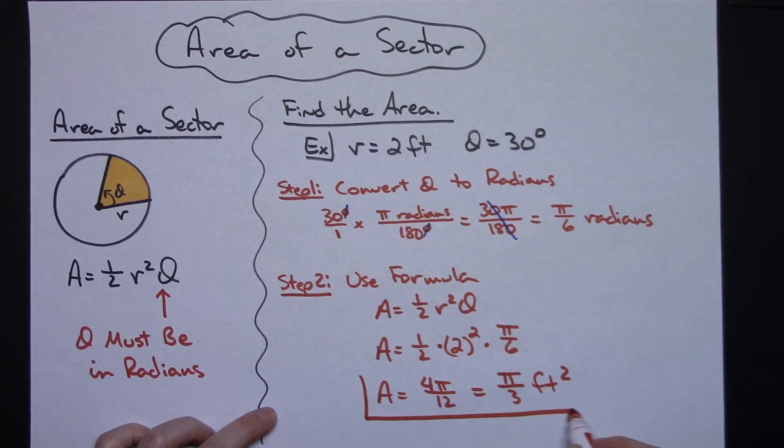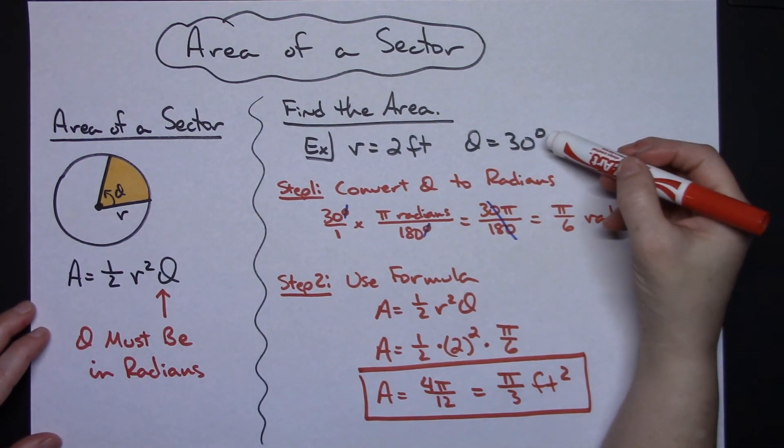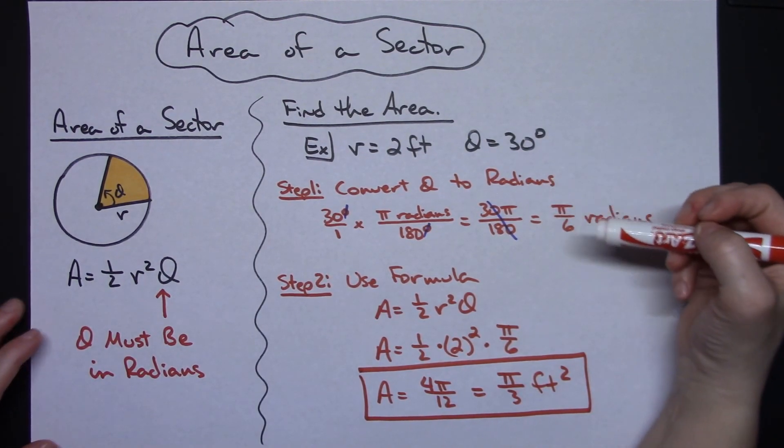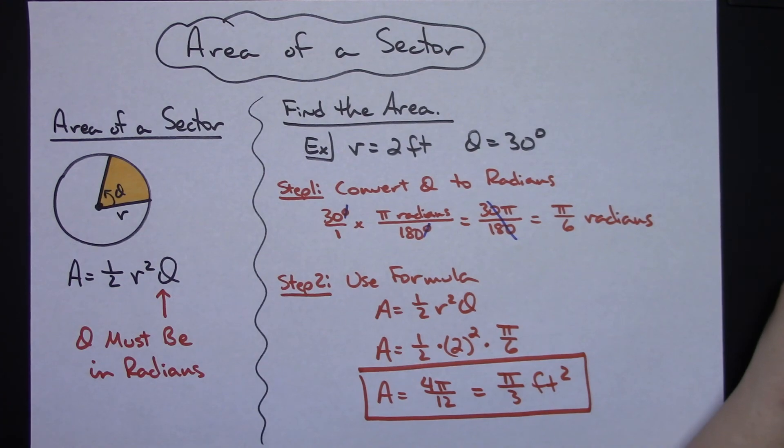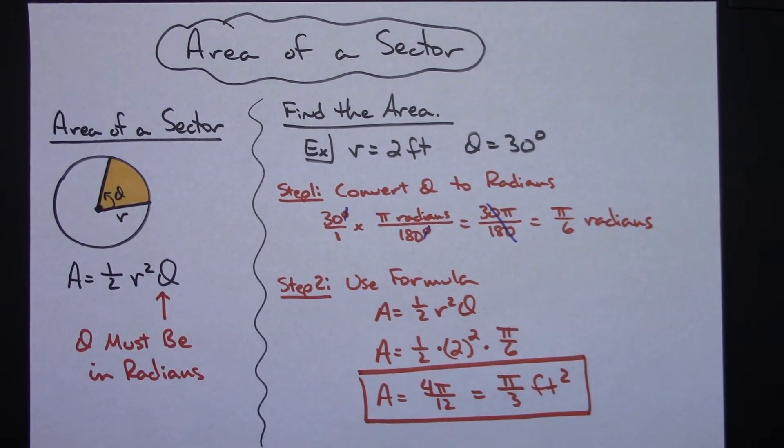So for my area of the sector, pi over 3 feet squared. Just a nice, straightforward, simple example of that area of a sector formula. And just making sure that if you are given a theta that's in degrees, you don't forget to convert that to radians before you start. Thanks for watching, and don't forget to subscribe to the channel.